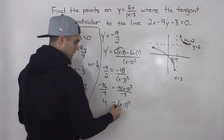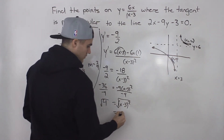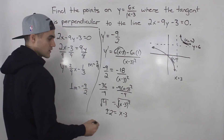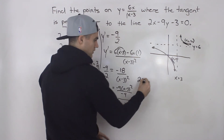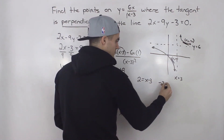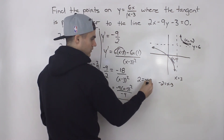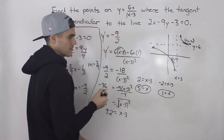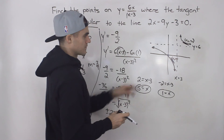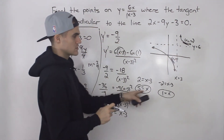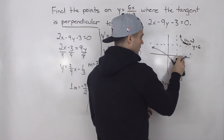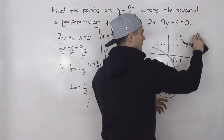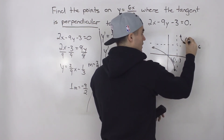Taking the square root of both sides gives x minus 3 equals plus or minus 2. Don't forget the plus or minus when square rooting. This gives two cases: x minus 3 equals positive 2, so x equals 5; and x minus 3 equals negative 2, so x equals 1. So the tangent slope is negative 9 over 2 at x equals 1 and x equals 5.